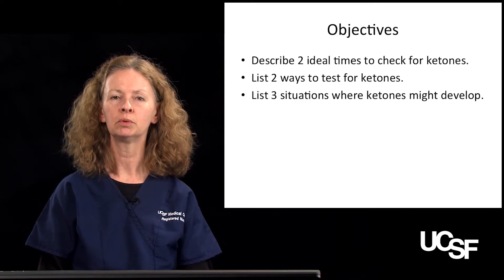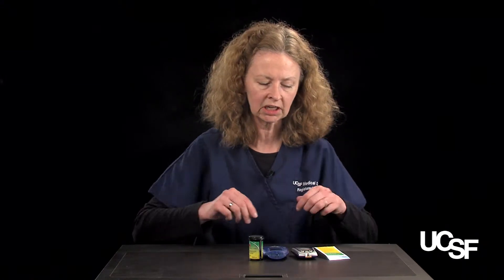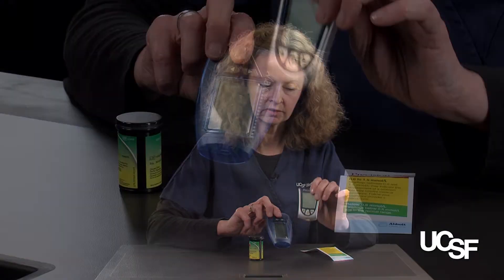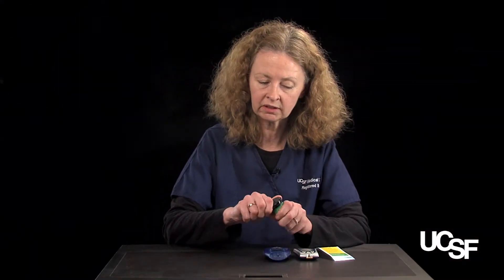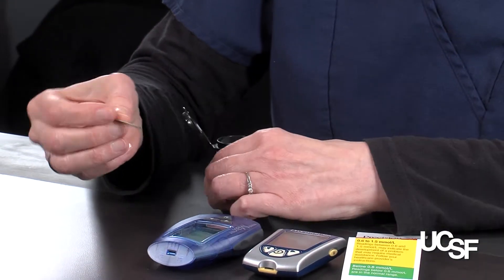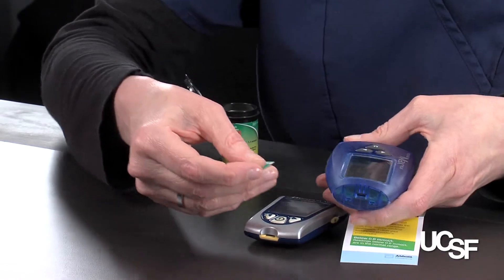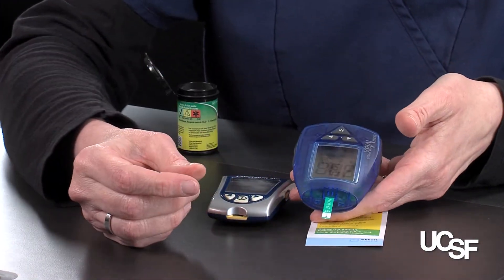I'm going to show you a couple of blood ketone meters and how they work. There are some meters on the market that, aside from blood glucose readings, can also test for blood ketone readings. These are just a couple of the meters that are out there — this is the Precision Extra, and this is the Novamax. They come with test strips that are specific for ketone testing, and the strip goes into the meter the same way it would for a blood sugar test, but in this case it's going to read blood ketones.